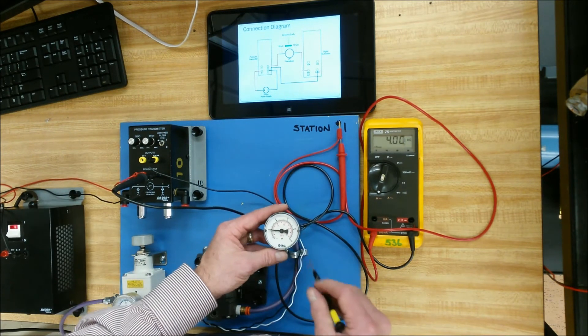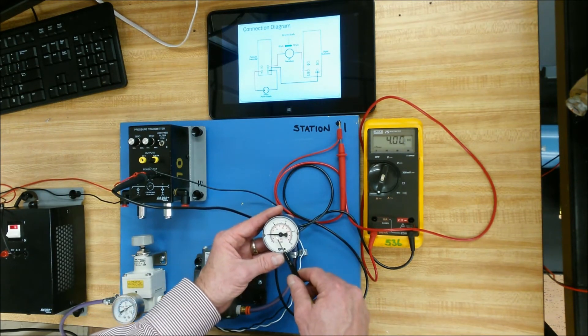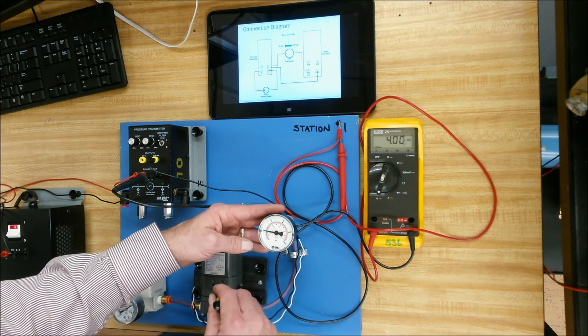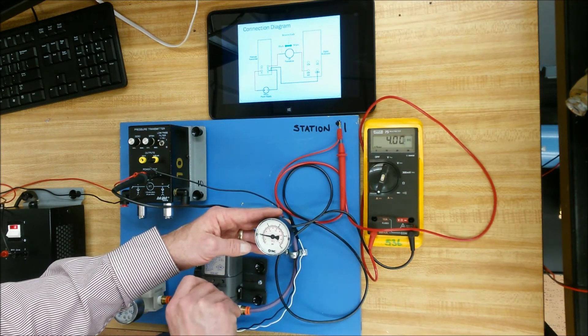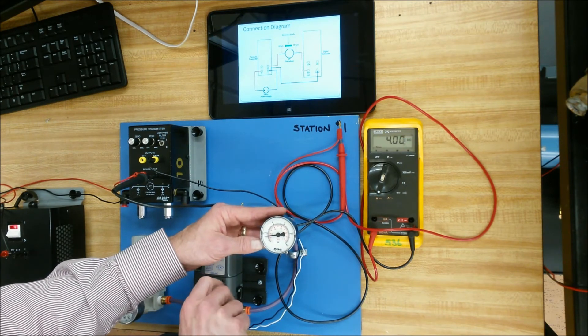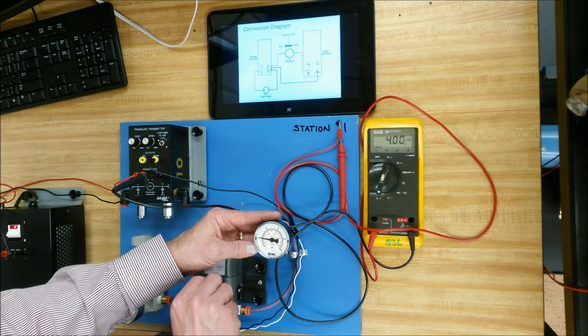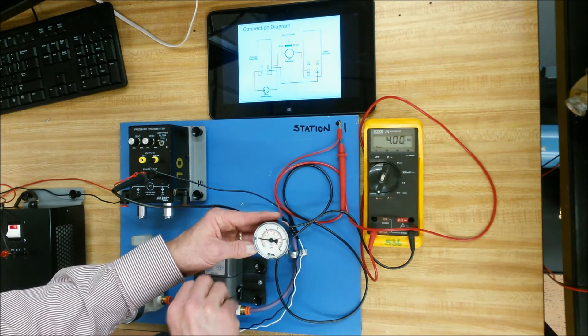Now, this one's already pre-calibrated. So you can see that 4 milliamps is giving me 3 psi out. If it was not calibrated, so say it was off a touch, you can use the zero knob and adjust the zero. So 4 milliamps gives you 3 psi out.